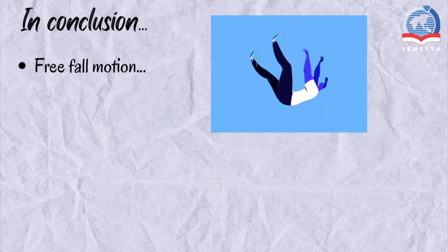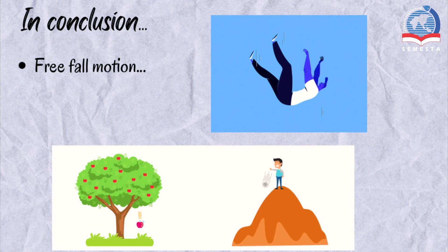In conclusion freefall motion is motion of a body where gravity is the only force acting upon it. All objects will fall with the same rate of acceleration regardless of their mass. In addition to that even though the sheet of paper and the paper ball both have the same mass they didn't fall at the same time. This is because of air friction and air friction causes the object to slow down as it falls.